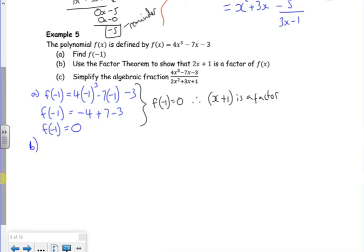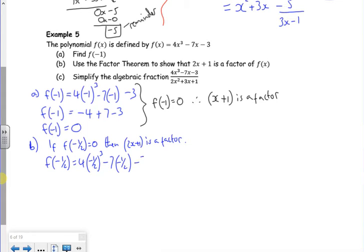Let's have a look at b now. b says use the factor theorem to show that 2x plus 1 is a factor. So if that's the case, if f(-1/2) is 0, then 2x plus 1 is a factor. So that's what I want to find out. f(-1/2) is 4 lots of minus 1/2 cubed minus 7 lots of minus 1/2 minus 3. Minus 1/2 cubed is minus 1/8 times by 4 is minus 1/2. Minus 1 minus is a plus, so that's 7 over 2 minus 3.